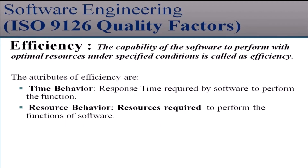The next factor is efficiency. The capability of the software to perform using optimal resources under specified conditions is called efficiency. The attributes of efficiency are time behavior and resource behavior. Time behavior means the response time required by the software to perform its functions. Resource behavior means the resources required to perform the functions of the software.